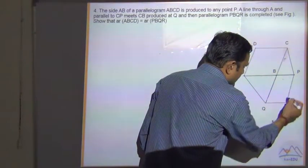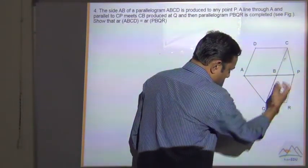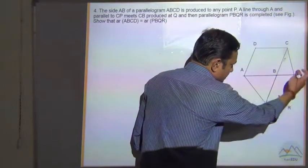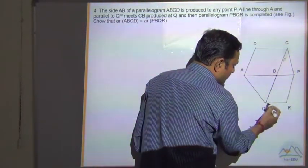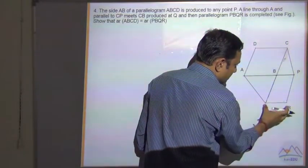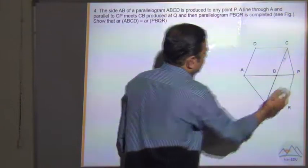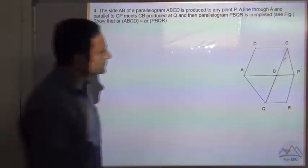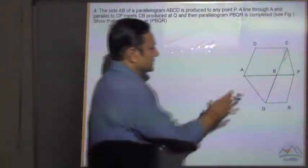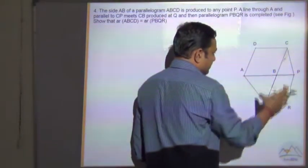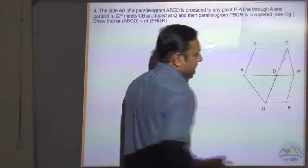So we complete the parallelogram. We draw a line parallel to BQ which is PR, and they are equal. Then we draw a parallel line QR parallel to BP, and they are equal. So this is a parallelogram. Show that area ABCD is equal to area PBQR.